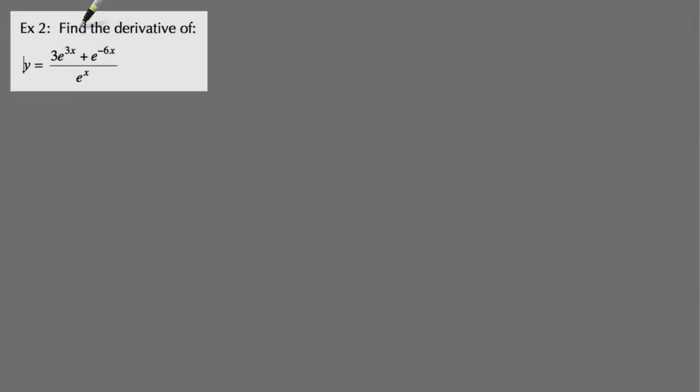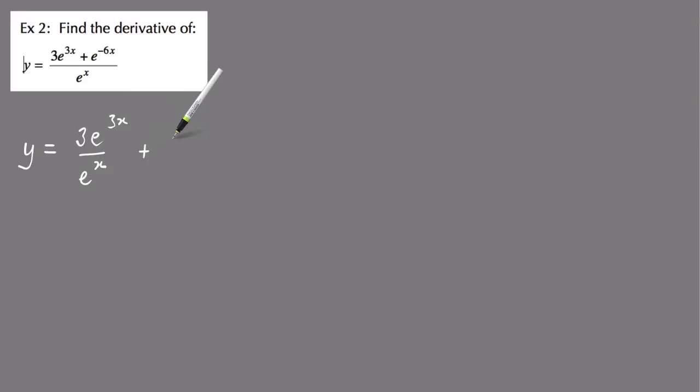In this example, I've left the cursor in front of that y, so that's really just a y there. Find the derivative of this expression. You can do this too, so again, you don't have to use the quotient rule, you can if you want to, but it's the long way of doing it. What you can do is simplify this expression, and all it becomes is 3e to the 3x over e to the x plus e to the minus 6x over e to the x.